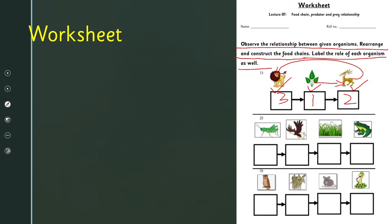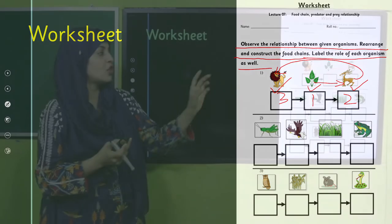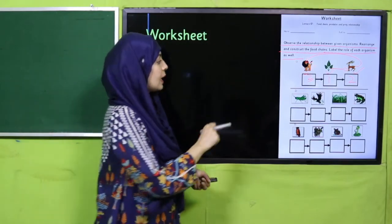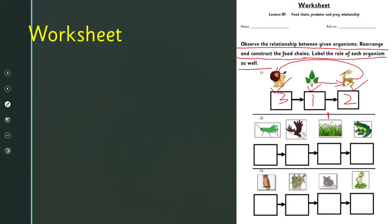In every food chain, the first organism is always the producer, so write number one underneath it. Then two, three, and four for the subsequent levels, and write the labels: producer, primary consumer, secondary consumer, and tertiary consumer. Complete the worksheet and submit it to your teacher.